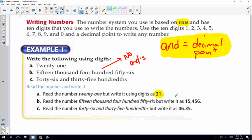Okay. Fifteen thousand four hundred fifty-six is one, five, comma, four, five, six.